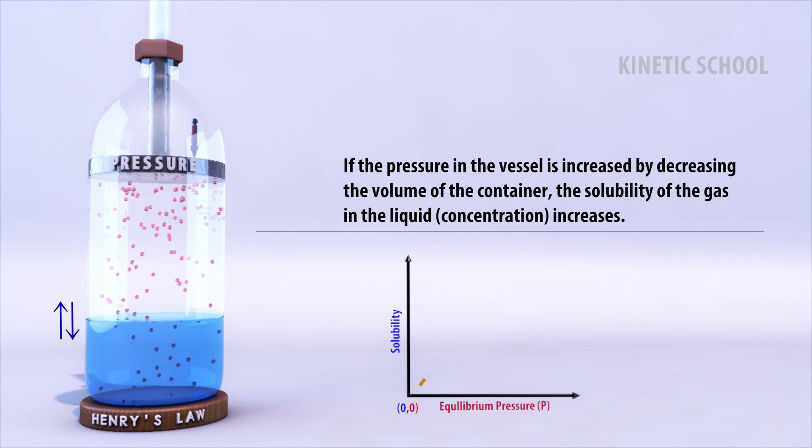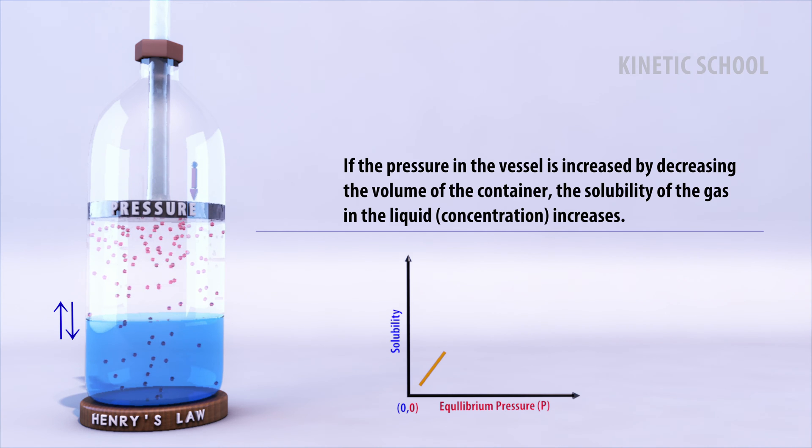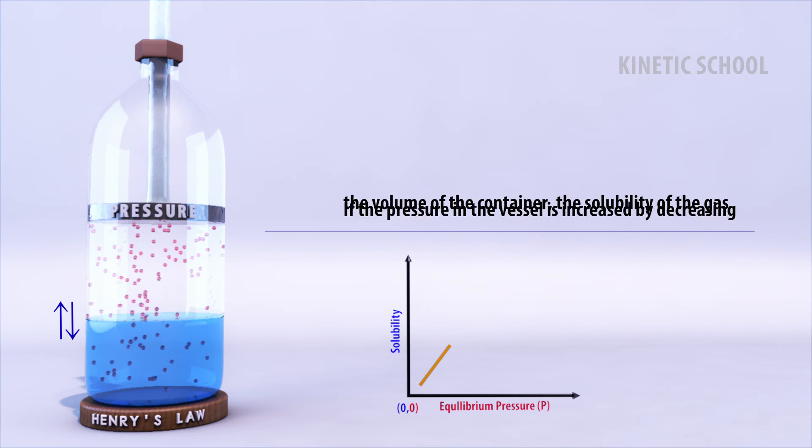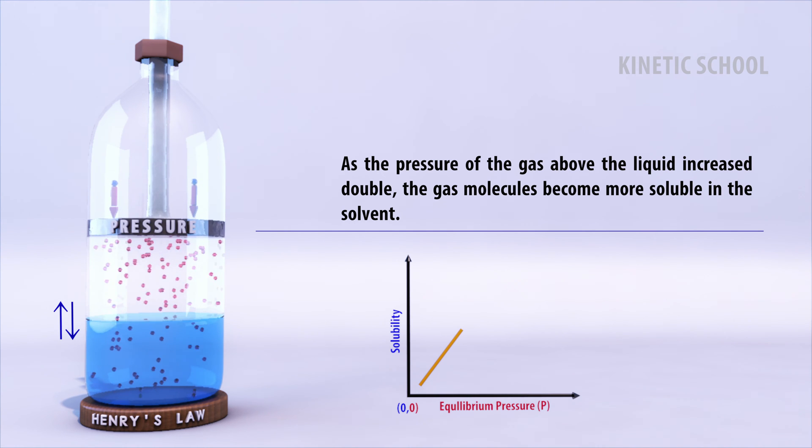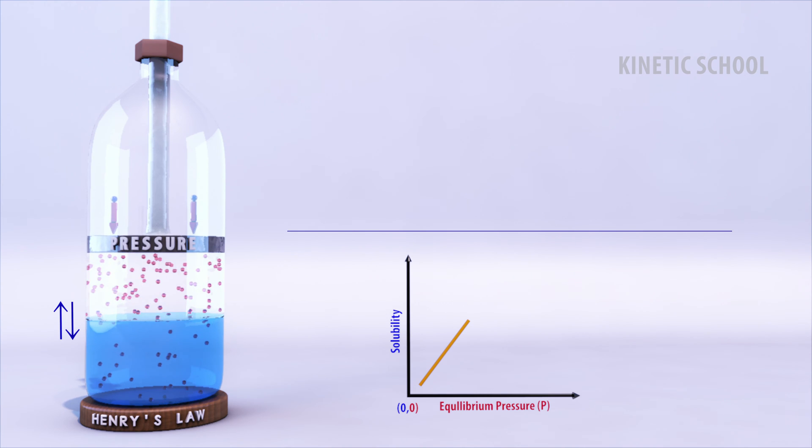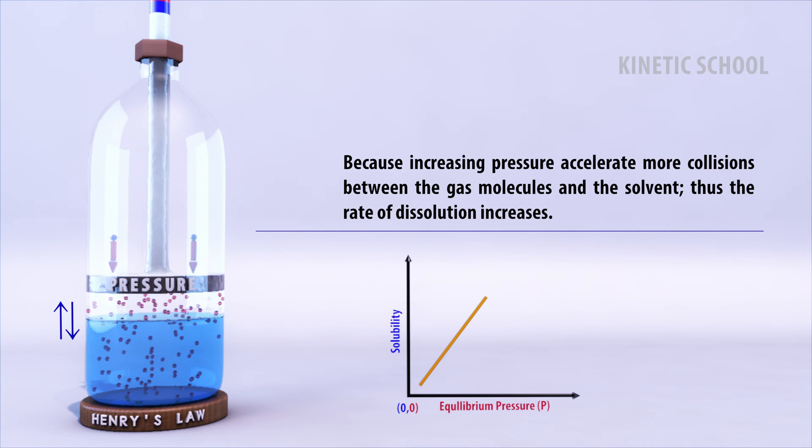If the pressure in the vessel is increased by decreasing the volume of the container, the solubility of the gas in the liquid increases. As the pressure of the gas above the liquid increases to double, the gas molecules become more soluble in the solvent. Because increasing pressure accelerates more collisions between the gas molecules and the solvent, thus the rate of dissolution increases.